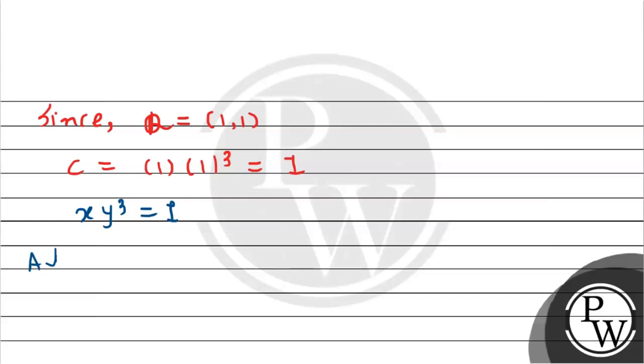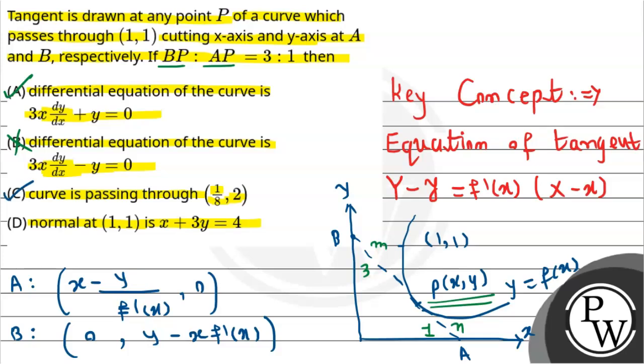Finally we get the equation of the curve as xy³ equals 1. To check if the curve passes through the point: let x equal 1/8, substitute in the curve: (1/8)y³ equals 1, so y³ equals 8 equals 2³, giving y equals 2. At x equals 1/8, y equals 2, therefore the curve passes through (1/8, 2).